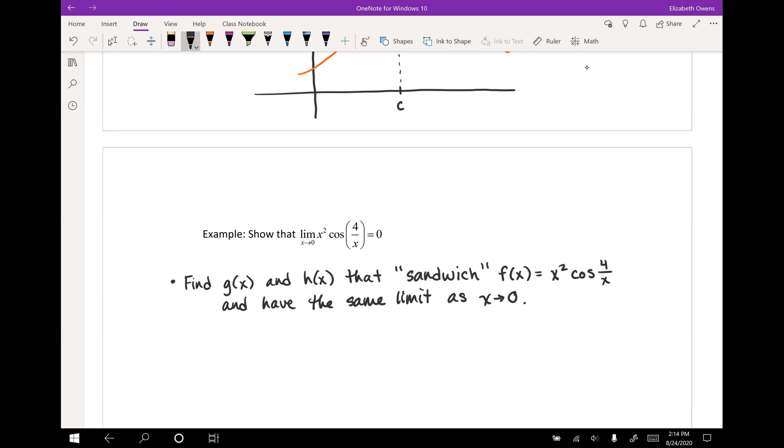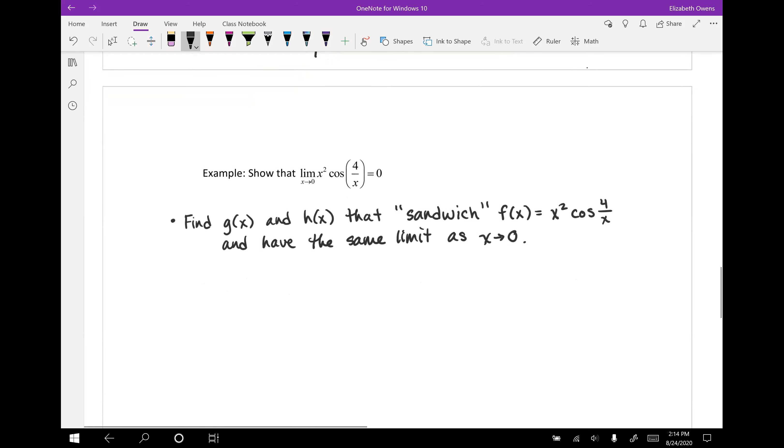These sandwich theorem problems will frequently involve a trig function, because trig functions use, well they have a lot of oscillation going on in them. So if we're able to find something to kind of sandwich that oscillation down a little bit, it can be pretty helpful. So on our trig functions, notice how this is a cosine function. And we know, or hopefully we know from trig, a really handy inequality about the values of cosine.